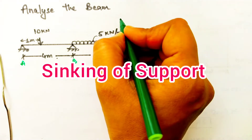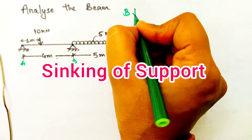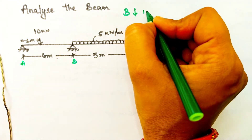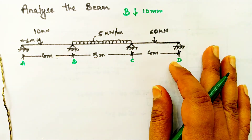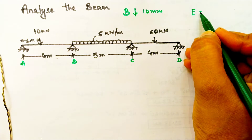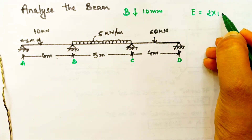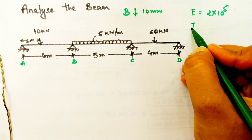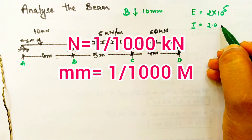In this question they have given that B support has been sinking by 10 mm. The first thing we will be doing is changing the units from mm to meters. The EI value given is also in Newton and mm, so we will be converting it into kilonewton and meter.